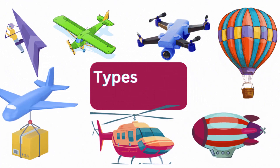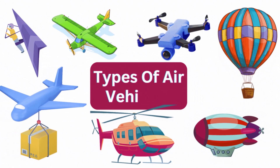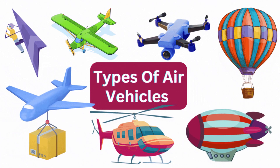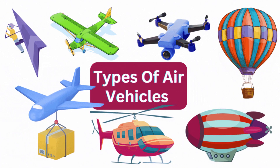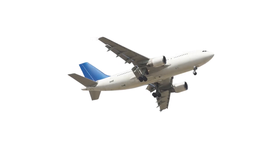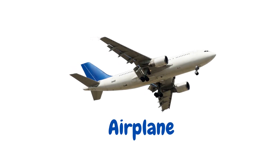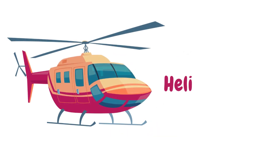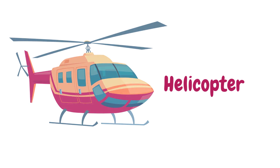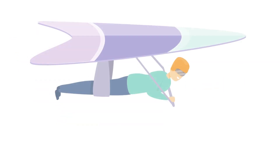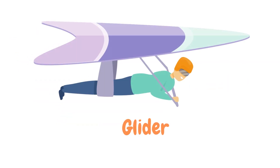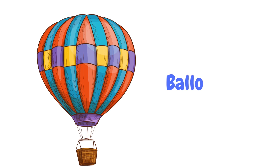Types of Air Vehicles in English. Airplane. Helicopter. Glider. Balloon.